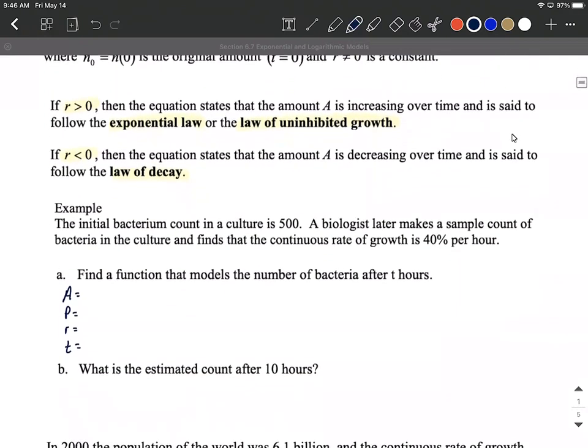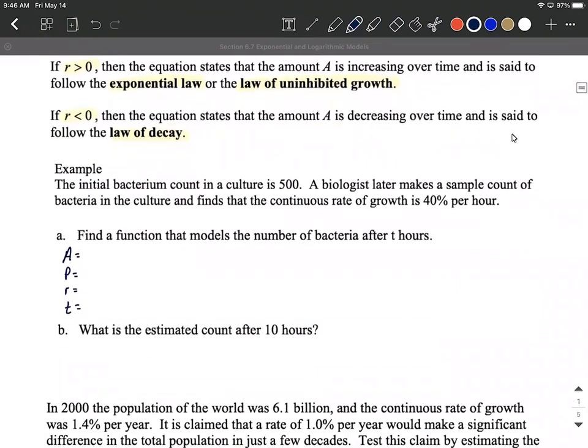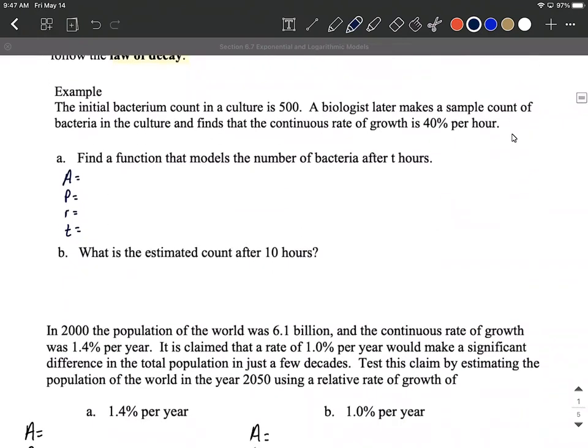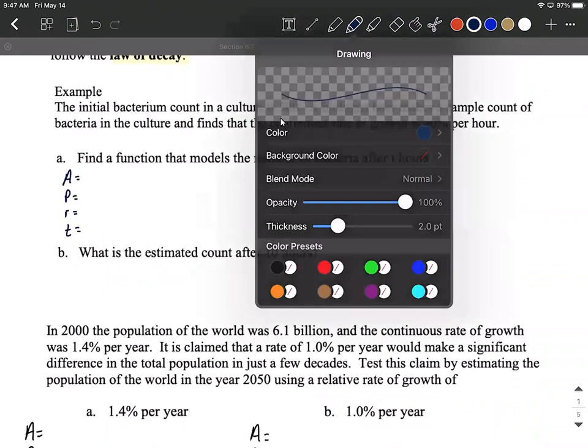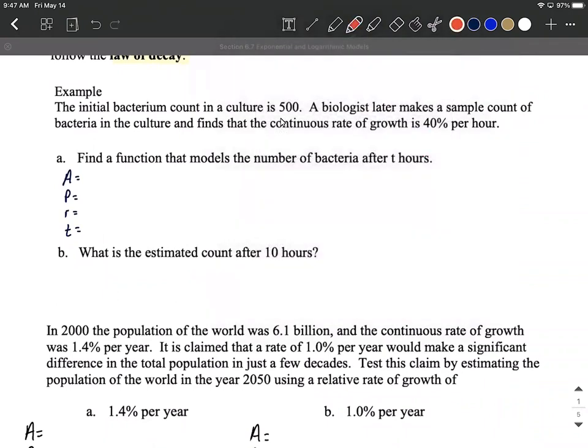So jumping right in, we have an example with two parts, maybe we'll do three. All right, the initial bacterium count in culture is 500. So as we go through, I'll try to just kind of identify the keywords, the numbers. We start with 500. Biologist later makes a sample count of the bacteria in the culture and finds that the continuous, big keyword, continuous rate of growth is 40% per hour. So our timeframe is gonna be in hours, but 40% is gonna go in as one of our values. So let's find a function that models the number of bacteria after t hours.